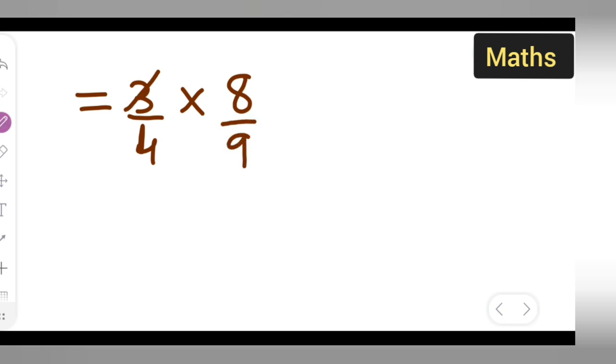Next is B upon C, which is 8 upon 9. So now cancel whatever is getting cancelled: 3 ones are 3, 3 threes are 9. 4 ones are 4, 4 twos are 8. So basically what we get is 2 upon 3.